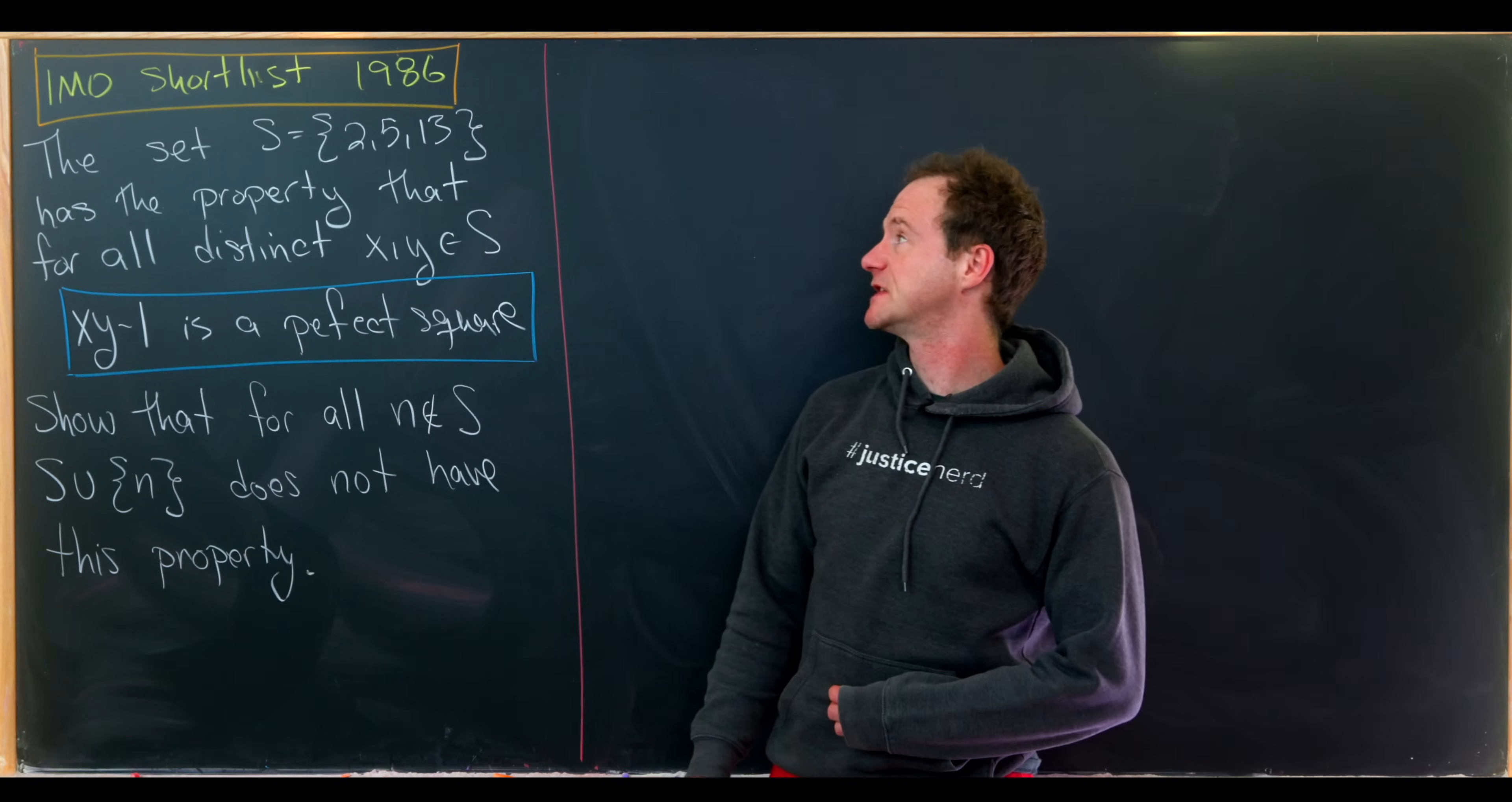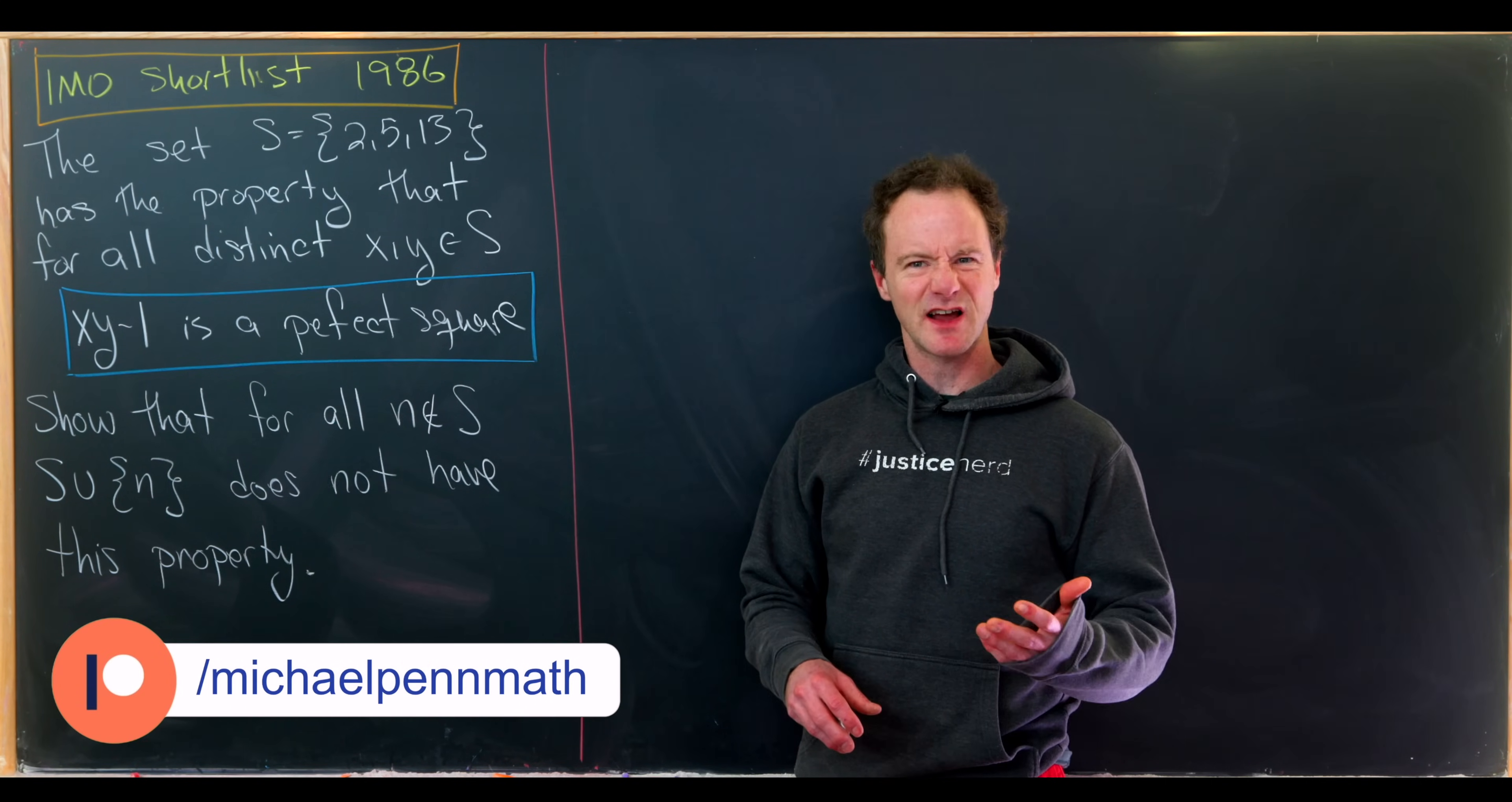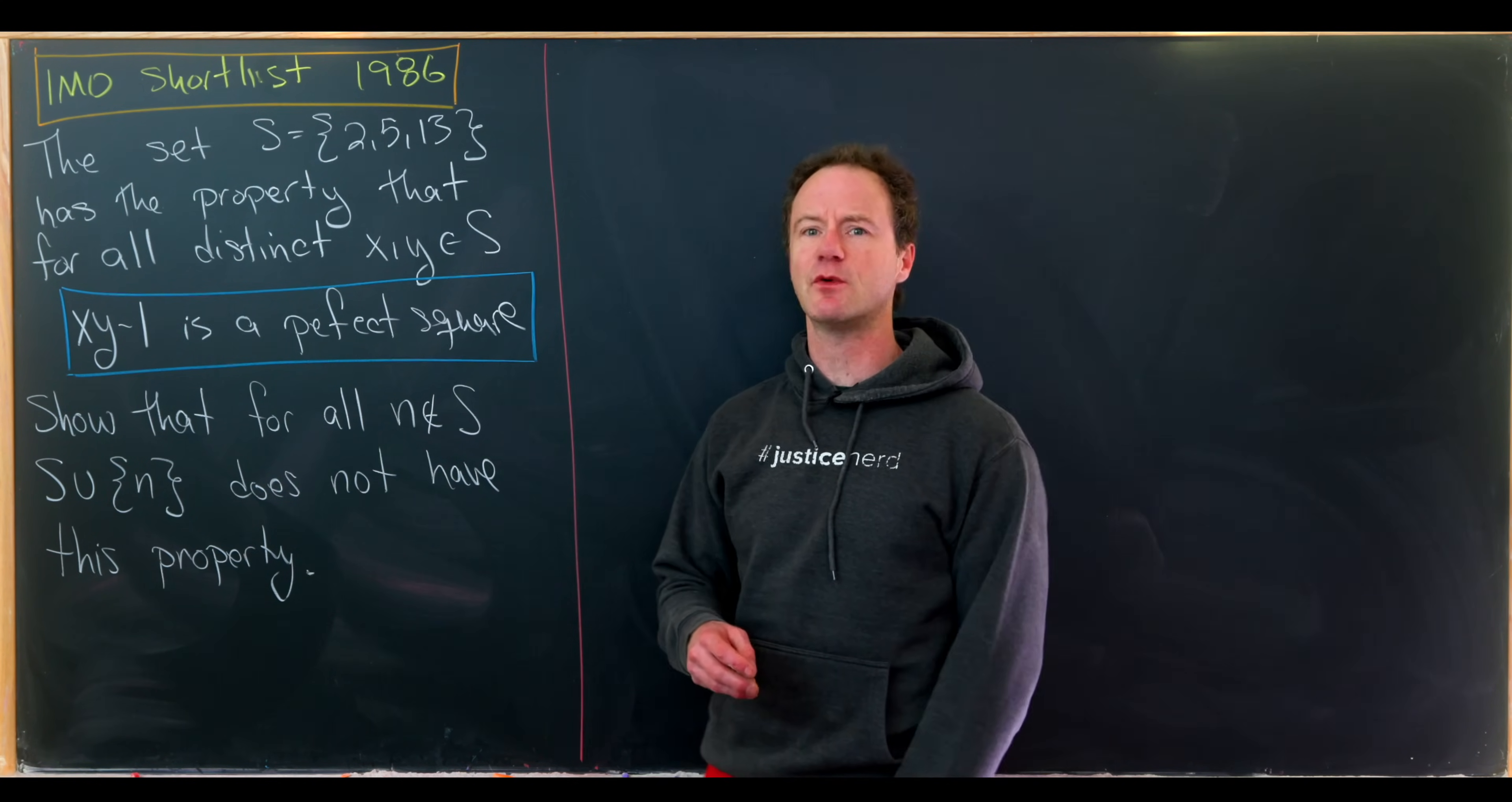Today we've got a problem that was shortlisted for the 1986 International Math Olympiad. I like to think about these shortlisted problems as kind of like potential problems, just like the potential vampire slayers from the show Buffy the Vampire Slayer in the last season. Give it a shout out in the comments if you watch that show as well. Okay, so let's see what we have here.